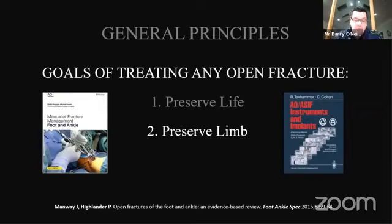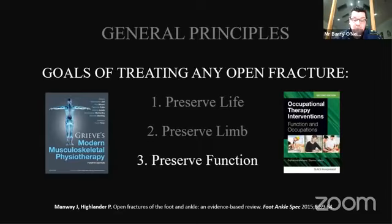Principle number two: preserve limb. During the American Civil War, 26% of those who suffered an open fracture subsequently died. Thanks to advancements in our knowledge, clinical skills, and the tools now available, this is no longer the case. Principle three: preserve function. As the management of open fractures has evolved, we now have the skills and technology to ensure that most people can and do get back to work, sports, and their lives in general. Prolonged immobilisation and heavy casts are no longer required for most of these injuries, and early mobilisation with appropriate physiotherapy and occupational therapy should be encouraged to minimise the time the patient is incapacitated.